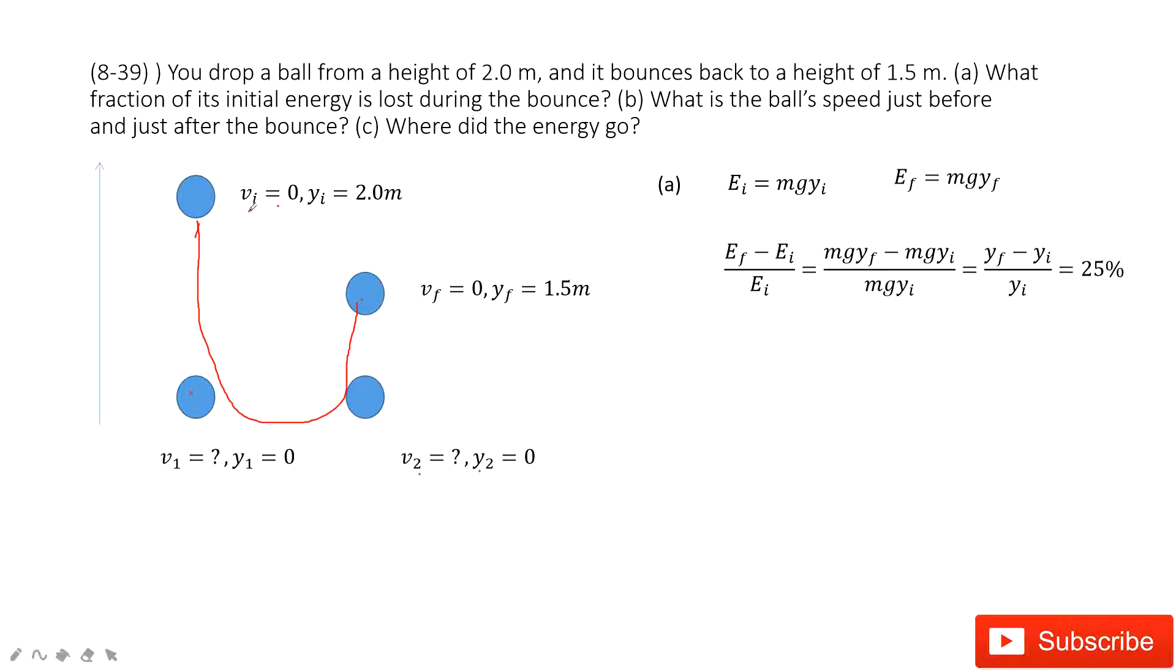The initial energy is the initial kinetic energy plus initial potential energy. Kinetic energy is 0 because the velocity is 0, so it just has mgy_initial. Similarly, the final velocity is 0, so the final energy is mgy_final. To find the fraction lost, we use (E_final - E_initial) / E_initial. In this case, we get that 25% of the energy is lost.